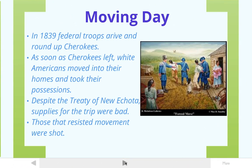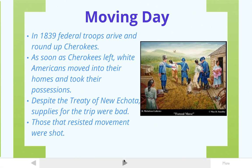The Cherokees were forced to move because of the Treaty of New Echota and the Indian Removal Act, and this move happened in 1839. Federal troops arrived and basically forced the Cherokees out of their homes. As soon as the Cherokees left, there were white families literally lining up on the border of the property to take their belongings. The supplies promised by the treaty were bad, and anyone who resisted was shot.